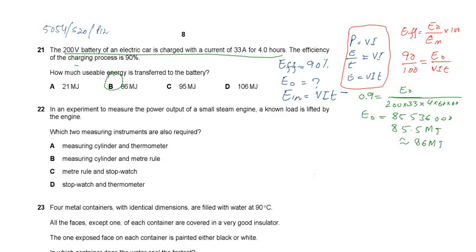Our question is from energy efficiency and electricity. A 200 volt battery of an electric car is charged with a current of 33 amperes for 4 hours. The efficiency of the charging process is 90%.